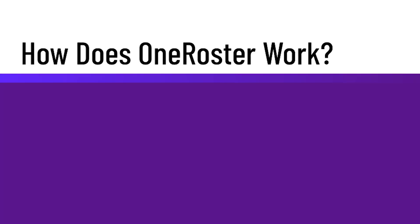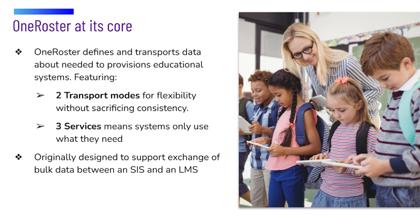So let's talk a little bit about what's under the hood. OneRoster breaks down into two ways to exchange data and three groupings of data. We have two transport modes for flexibility, and the three services or groupings of data means you only have to implement the pieces of OneRoster that you need. The original use case that OneRoster was designed to solve was the bulk data needs of moving information from a source of truth system, like an SIS, to the main downstream teaching and learning systems, like a learning management system.